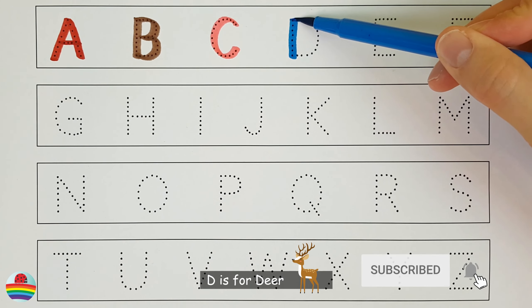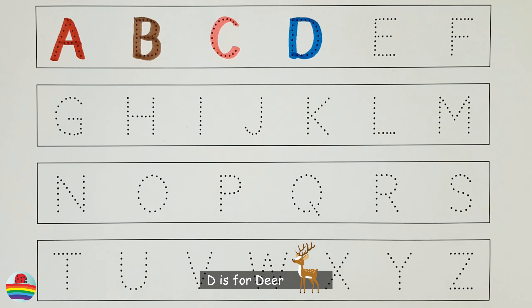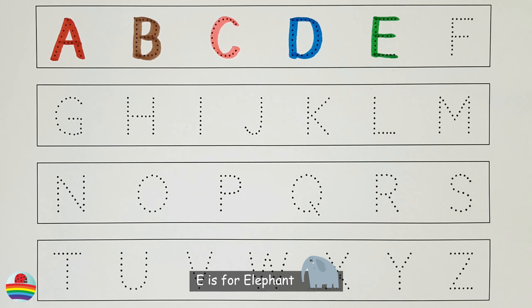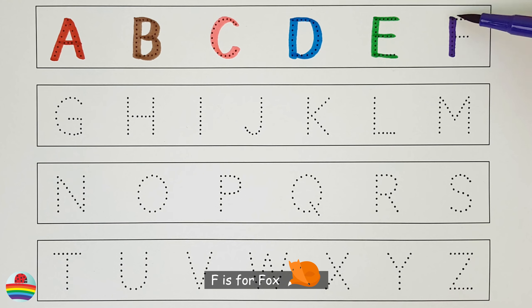D. D is for Deer. D. E. E is for Elephant. E. F. F is for Fox. F.